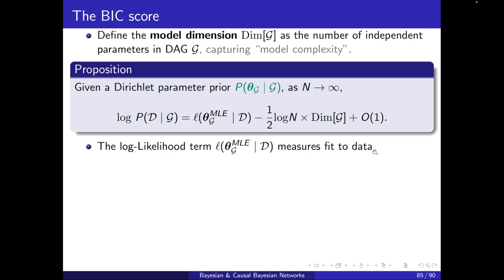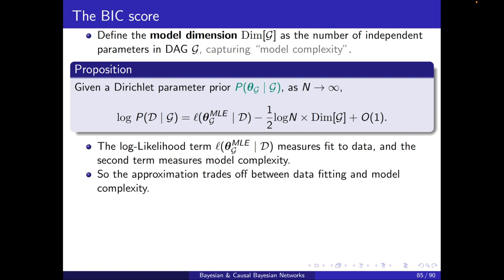So, what does this mean? It is translating the marginal likelihood that we saw in the previous section to the likelihood and to the complexity of the model. The log likelihood term, this is the first term, measures the fit to data. And the second term measures the model complexity. So, the approximation trades off between data fitting and model complexity.